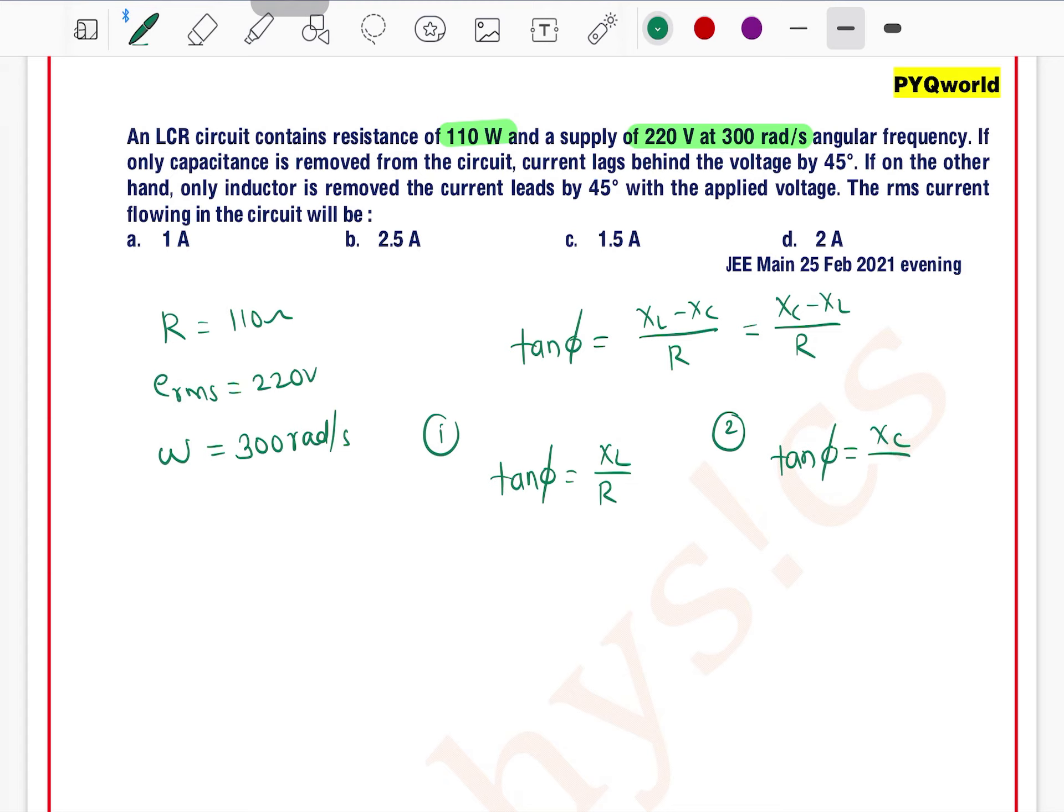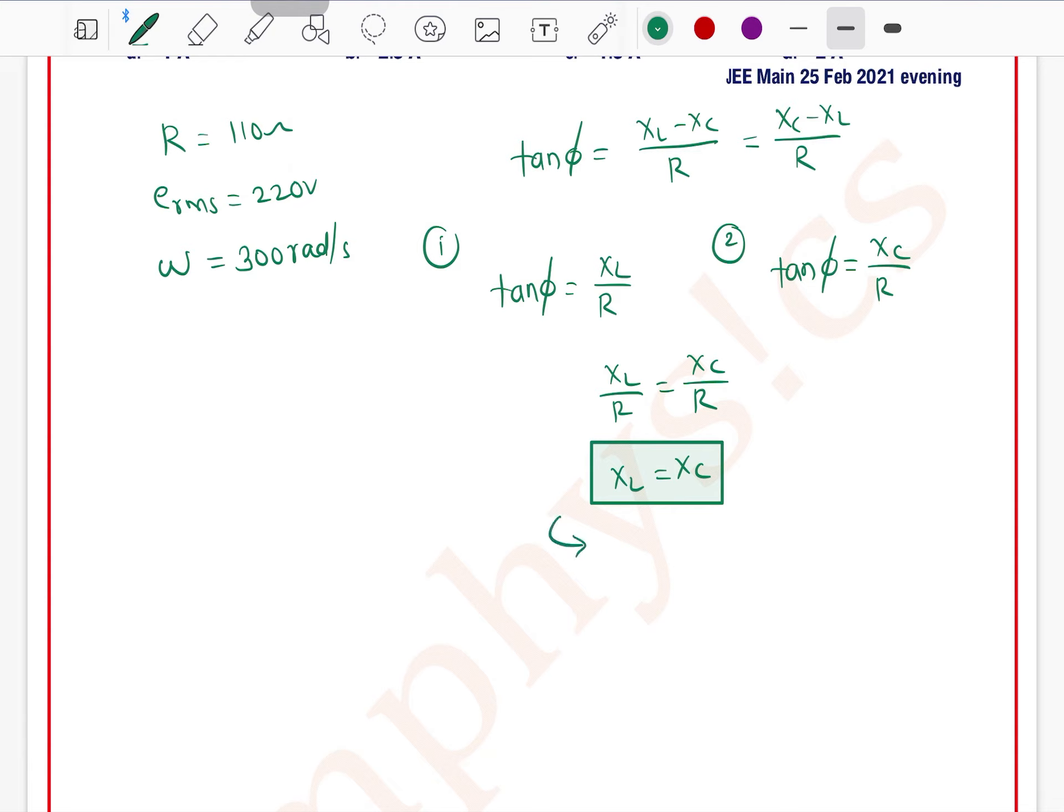Second case, if on the other hand only inductor is removed, again phase difference is 45, we can use the second formula. If I compare both the equations, then we'll get XL by R is equal to XC by R. So it's meaning XL is equal to XC.